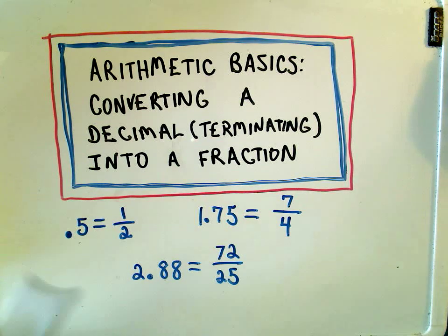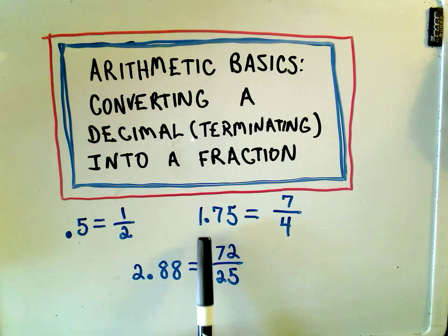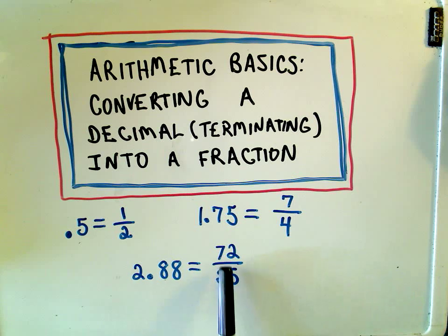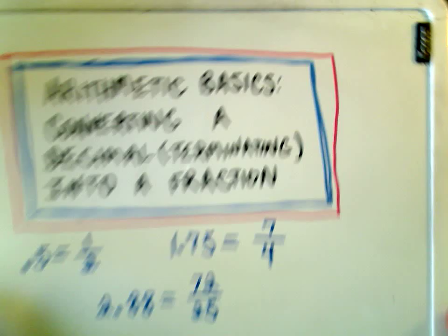I want to show, for example, that we can write 0.5 as one half, 1.75 as the fraction 7 over 4, and 2.88 as the fraction 72 over 25. So, this is how I do it.